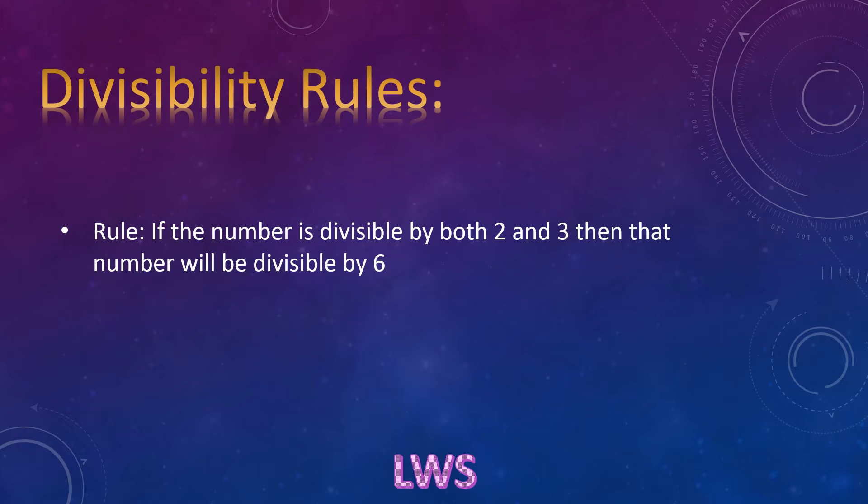If a number is divisible by both 2 and 3, then that number will be divisible by 6.